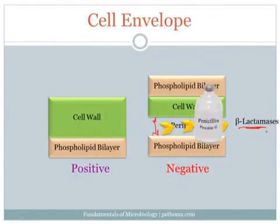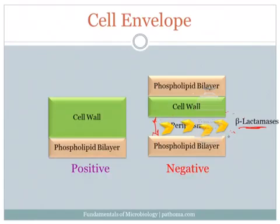Normally penicillin works by traveling through the cell envelope of gram-negatives and then acting on the cell wall to destroy them. However, if these gram-negatives possess beta-lactamases, they will degrade the penicillin and will not be destroyed.